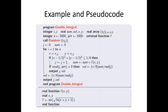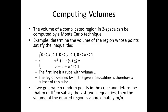We can also use this Monte Carlo method for computing volumes of complicated regions in 3D space. For example, we want to determine the volume of the region whose points satisfy these three inequalities. The first one is a cube with volume 1, so the overall region is a subset of this cube given by the other two equations. If we generate n random points in the cube and determine that m of them satisfy the last two inequalities, then the desired volume is approximately m/n.